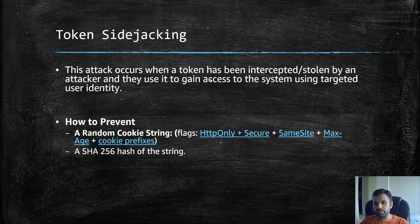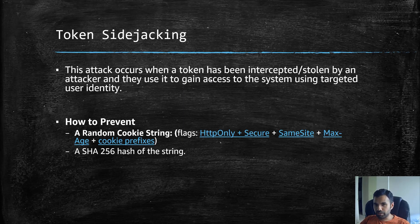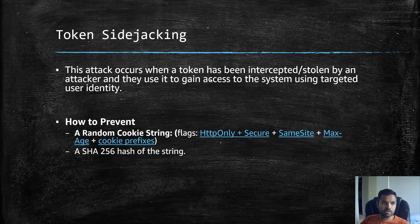One standard way is: in addition to the token, when the user authenticates, you create a cookie. This random cookie string will have all the necessary flags — HttpOnly, Secure flag, SameSite cookie, and the __Host- cookie prefix — and we are also going to compute on top of it a SHA-256 hash of the string.